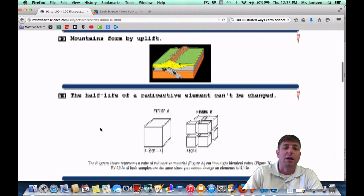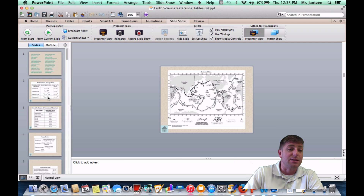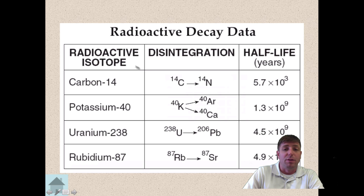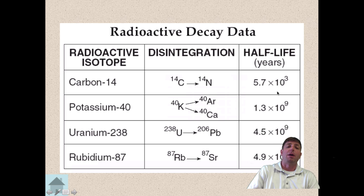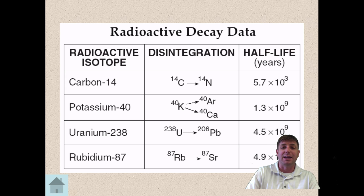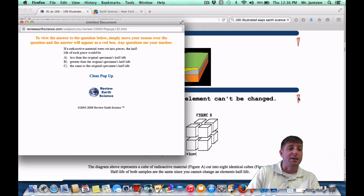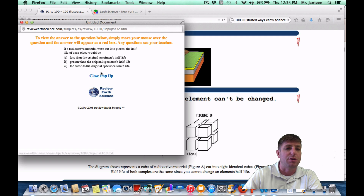Number 94: the half-life of a radioactive element can't be changed — it's always steady and constant no matter what you do to it. Students have a problem with this because once you go through one half-life and have half the original substance remaining, they think it would take less time. No — it always takes the same amount of time. It's a random decay, a random breakdown, which is why it's always a steady decay rate. As a Regents question: if the radioactive material were cut into pieces, the half-life of each piece would stay the same — choice C.